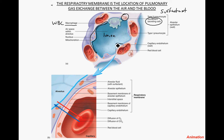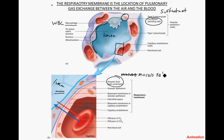Zooming in further at the interface of the alveolus, here is the alveolar lumen with air, and a small amount of fluid — a mucus — is secreted here. This mucus contains surfactant, which reduces the surface tension of that liquid and helps keep the airways open. Otherwise, these structures are so small and thin that hydrogen bonding in the mucus would cause the whole alveolus to collapse in on itself.